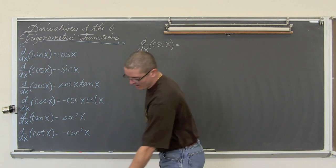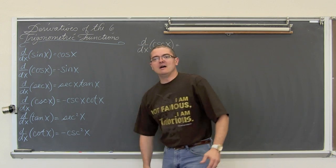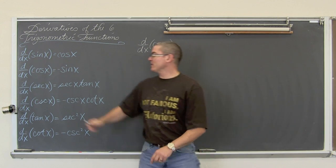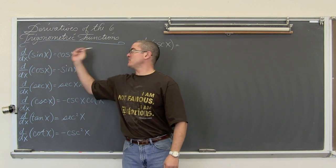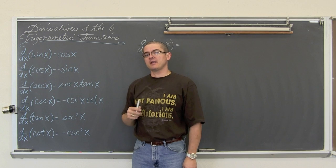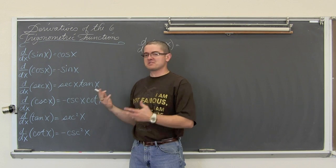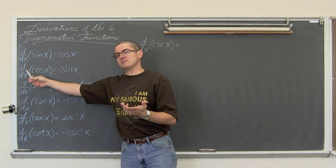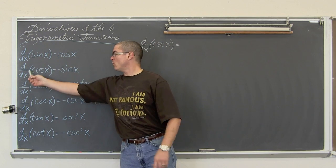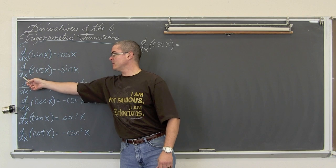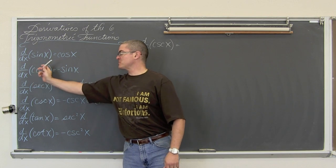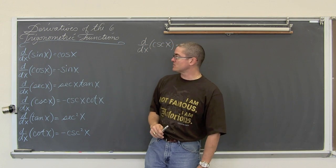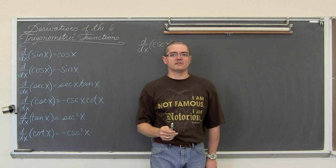I am Mr. Tarrou. I have explained how the derivative of sine is equal to cosine, or at least stated it, and I explained with a graphical demonstration why the derivative with respect to x of cosine of x is equal to the negative sine of x.